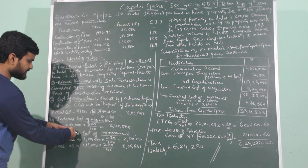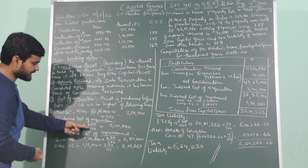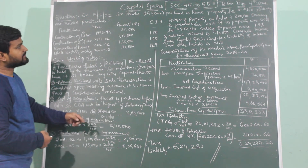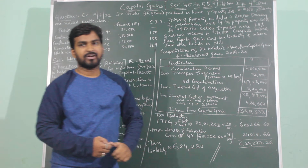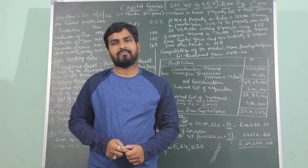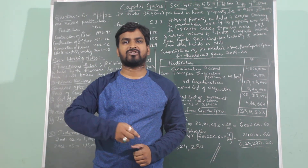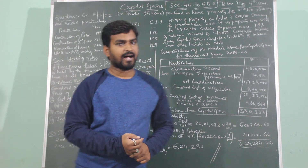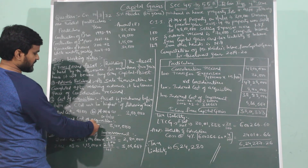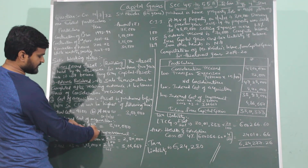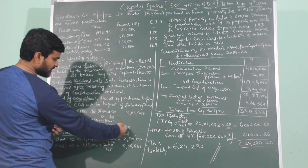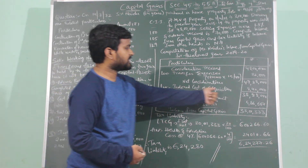Indexed cost of acquisition is calculated as: cost of acquisition × previous year index ÷ index of the year in which the asset was purchased. Cost of acquisition is Rs. 3 lakhs, previous year index for 2018-2019 is 280. Since the asset was purchased before 1st April 2001, the index of the year of purchase is taken as 100. So: 3 lakhs × 280 ÷ 100 = Rs. 8 lakhs 40,000. Indexed cost of acquisition is Rs. 8 lakhs 40,000.